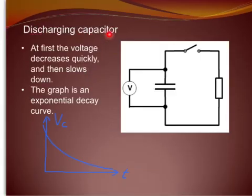Discharging a capacitor, that's a circuit for it. Here you can see that the capacitor now is taking the place of the battery. Once that switch is closed, current will flow briefly until the capacitor is totally discharged. At first the voltage decreases quickly and then slows down. And the graph is an exponential decay curve.